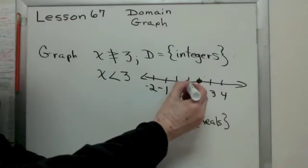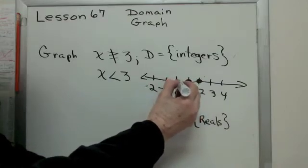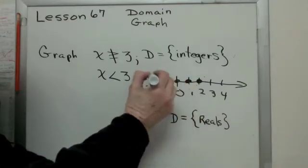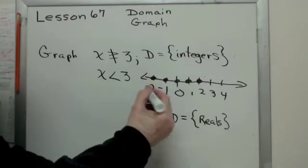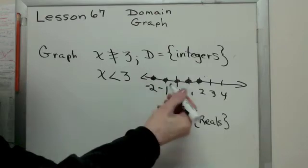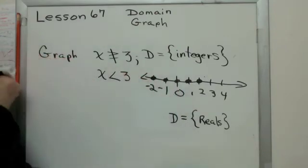How about 2? How about 1? How about 0? How about negative 1? How about negative 2? Does this graph include negative 3? Yes, it does. It includes everything going in that negative direction.